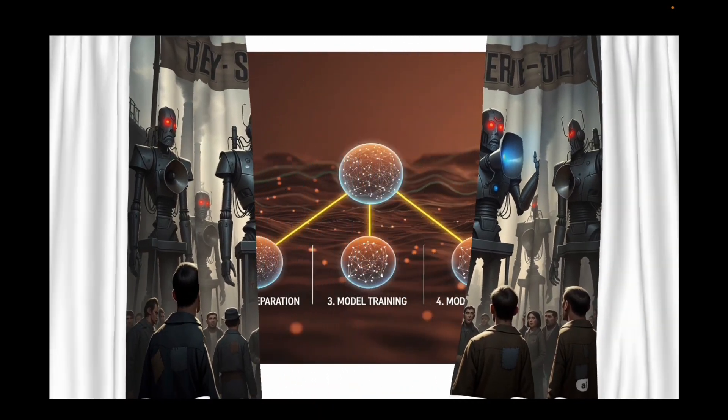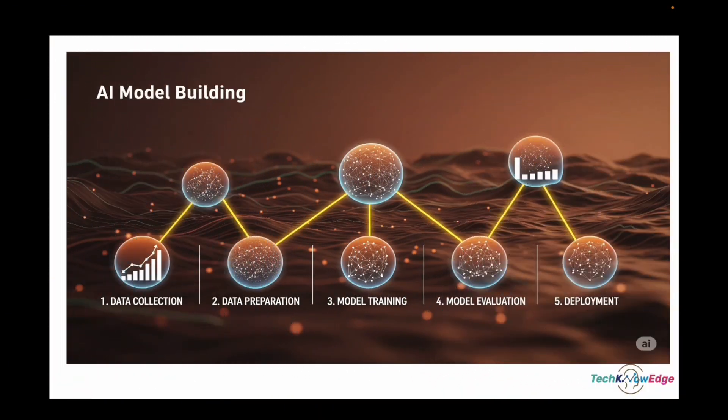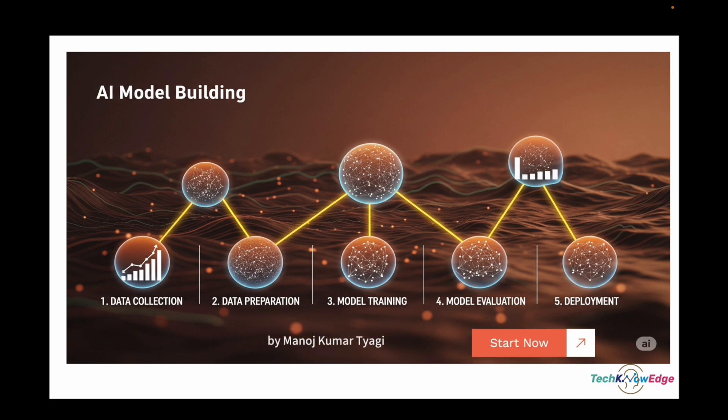Think of the AI life cycle as the backbone of building AI models. It's kind of like the software development life cycle you may already know, just with a few extra twists that are unique to AI. And once you understand the cycle, every stage — from defining the problem to deploying the model — will start to feel like a natural journey rather than a mystery.